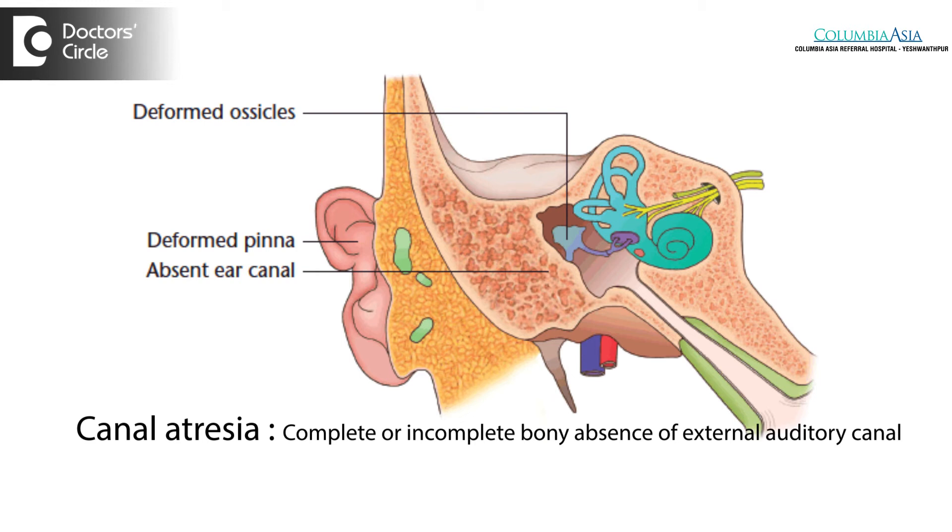These children can also have associated ossicular problems — that means problems in the bones of the middle ear where the bones will not move as freely as they are supposed to, or they are deformed, hence leading to a hearing loss which is called conductive hearing loss.